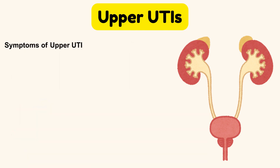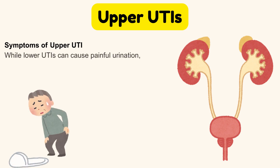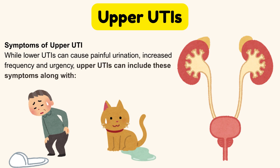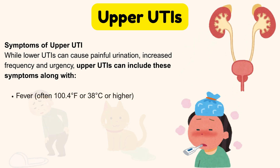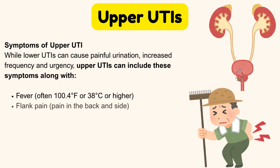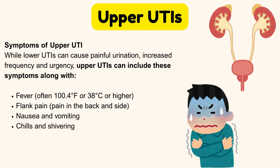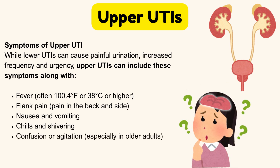Symptoms of upper urinary tract infection: while lower UTIs can cause painful urination, increased frequency, and urgency, upper UTIs can include these symptoms along with fever — often 100.4 degrees Fahrenheit or 38 degrees centigrade or higher — flank pain (pain in the back and side), nausea and vomiting, chills and shivering, and confusion or agitation, especially in older adults.